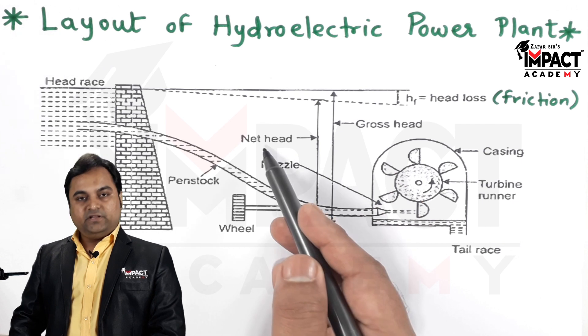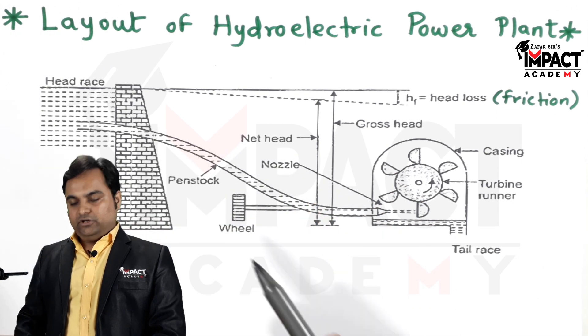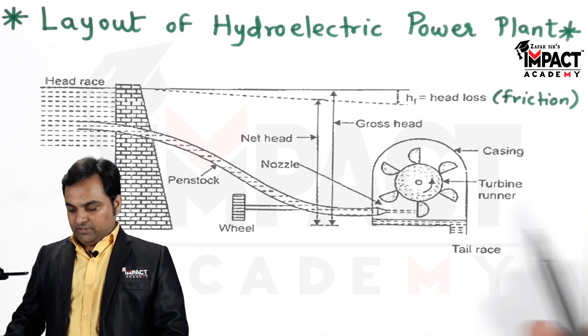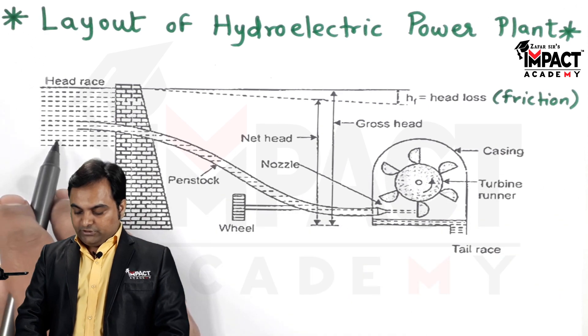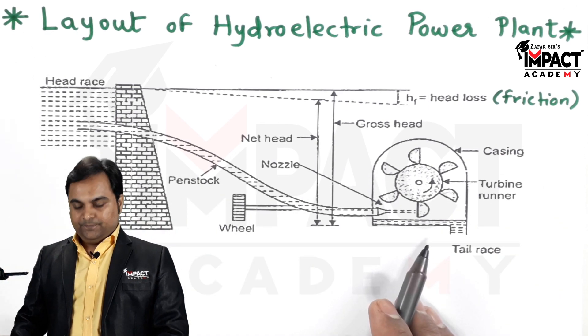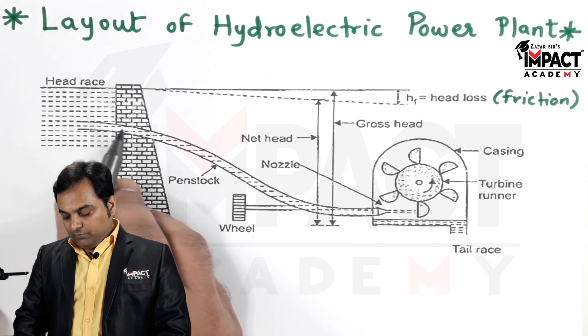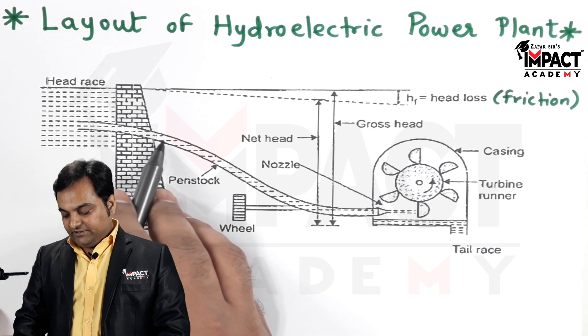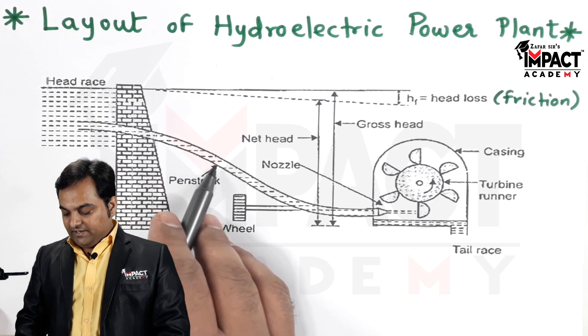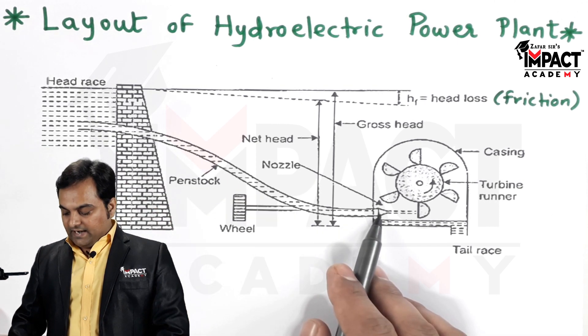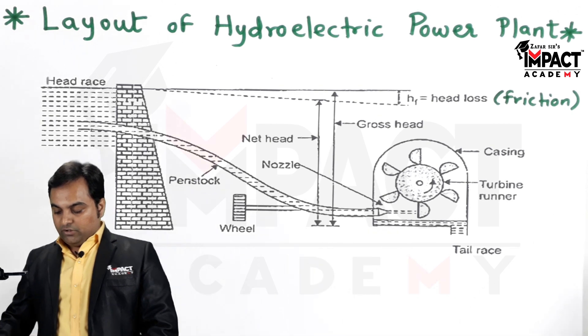Now if there is some loss in the head, that would result in the loss in kinetic energy because the whole principle here is the conversion from potential energy to kinetic energy. So when the water would be entering, it enters at a greater amount of velocity. There is conversion from potential to kinetic inside the penstock, and at the nozzle we can see there is variable passage.